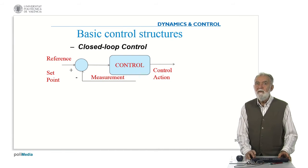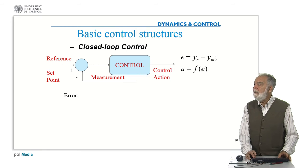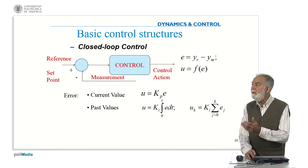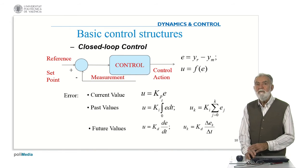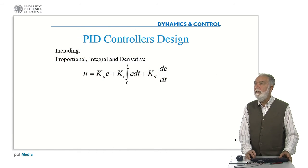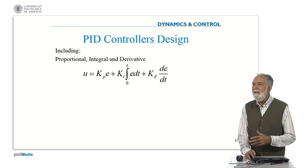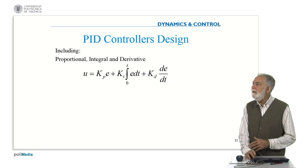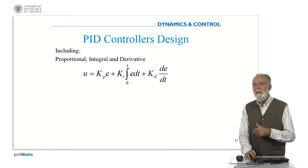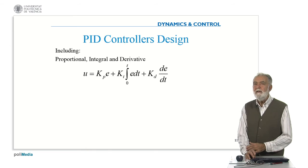What is more interesting is to have a control action which is a function of the current value of the error, which also takes into account the past values of the error — that is the integral or accumulated error — and also the future values of the error, the derivative or the increment. Altogether we have what is called the PID controller. PID controllers represent almost 90-something percent of the controllers in the industry, because they capture these three ideas: control proportional to the error, proportional to past values (the integral), and proportional to the future values of the error (the derivative).